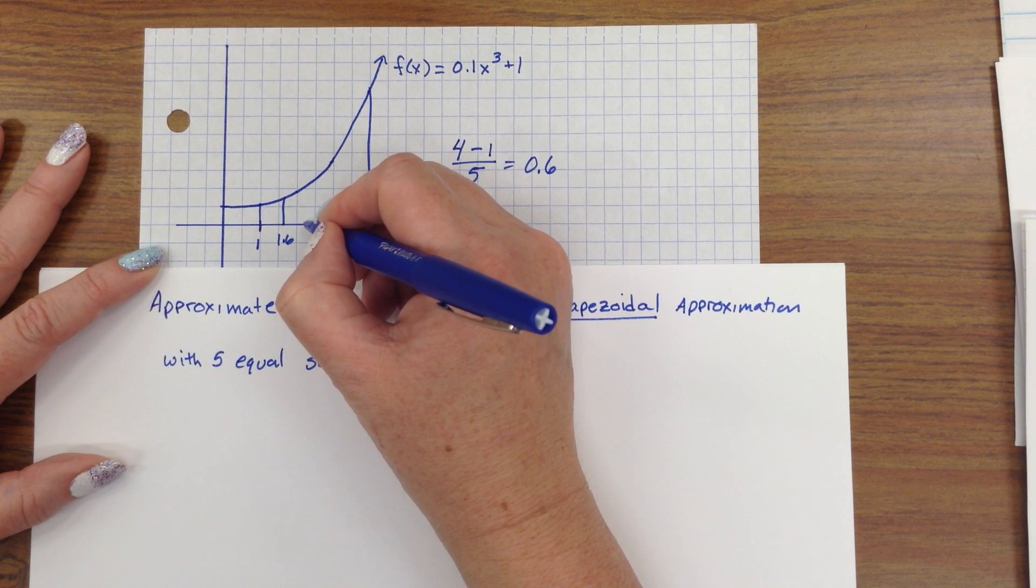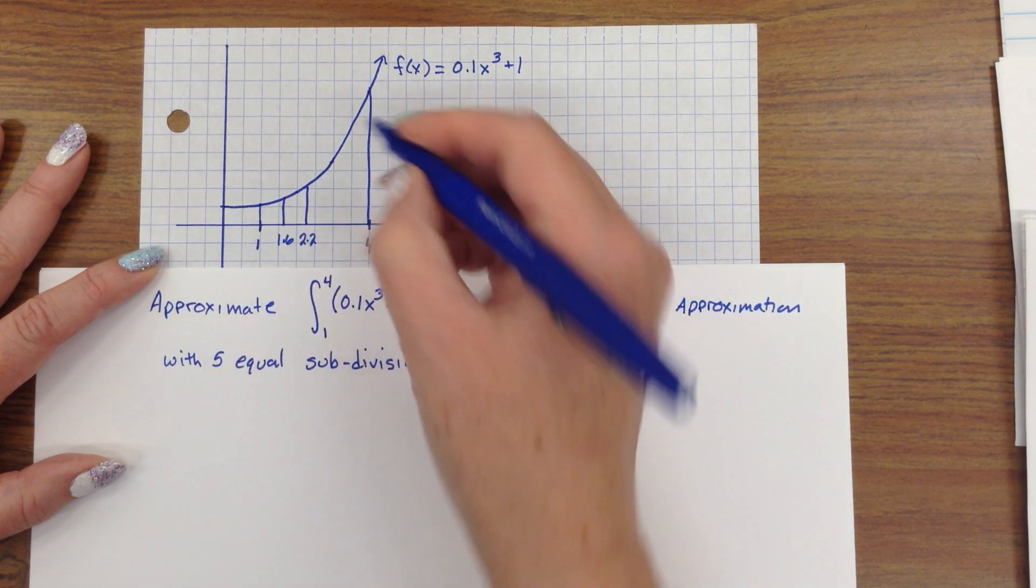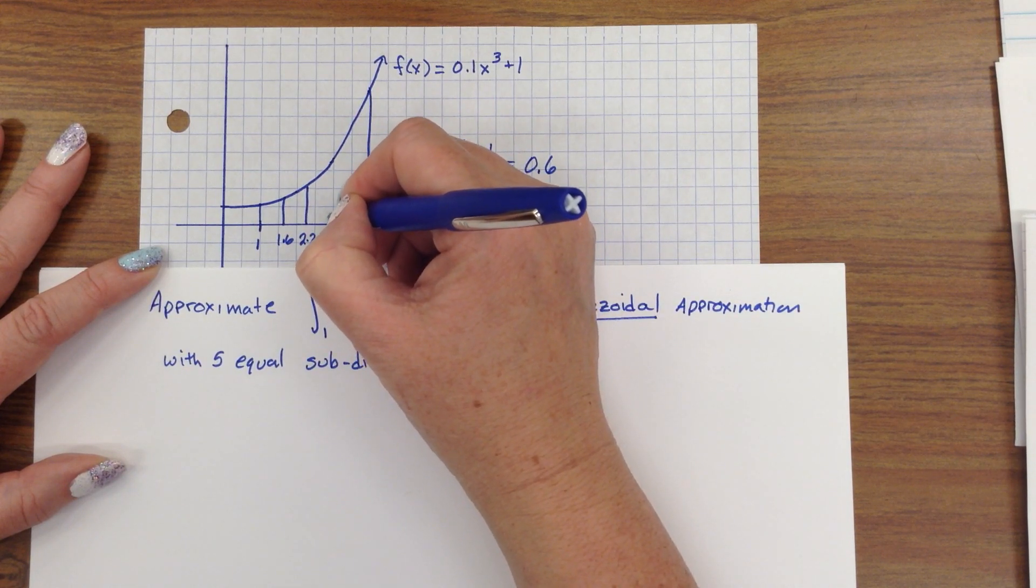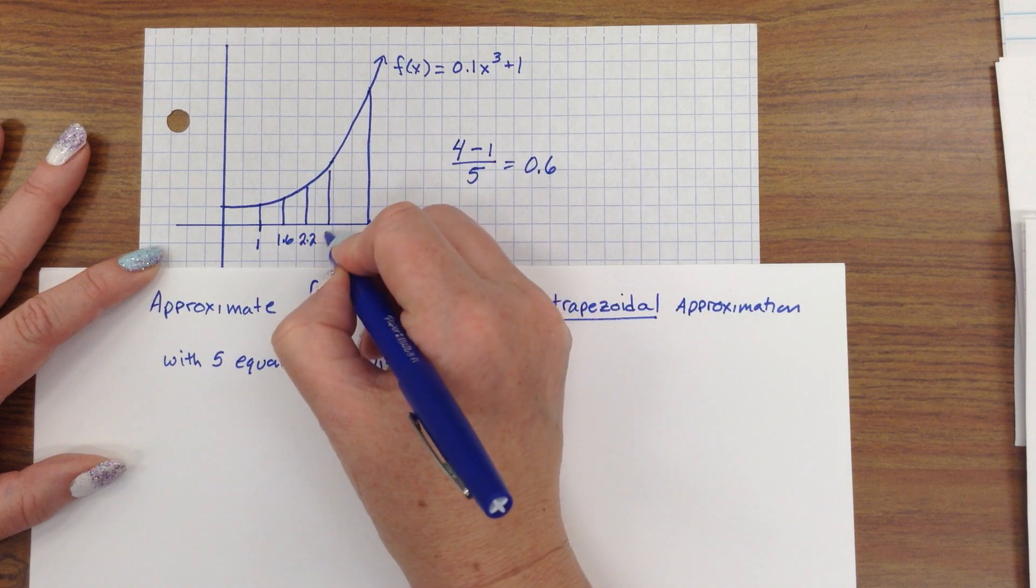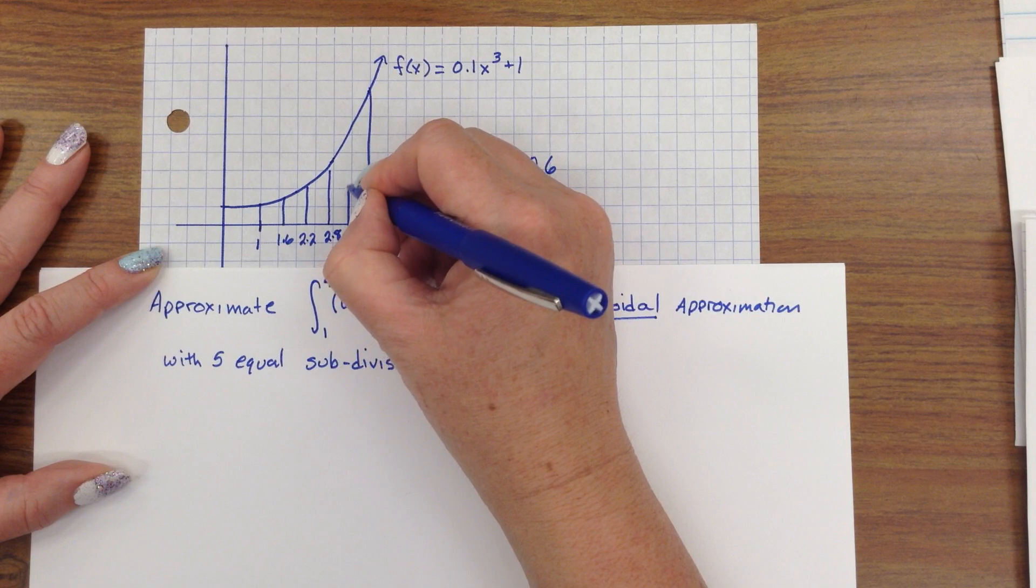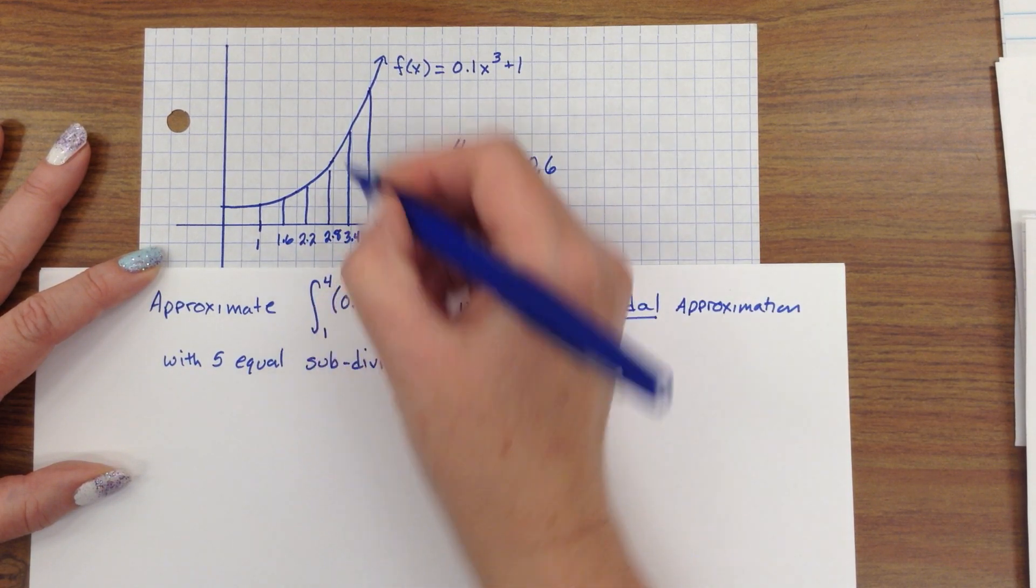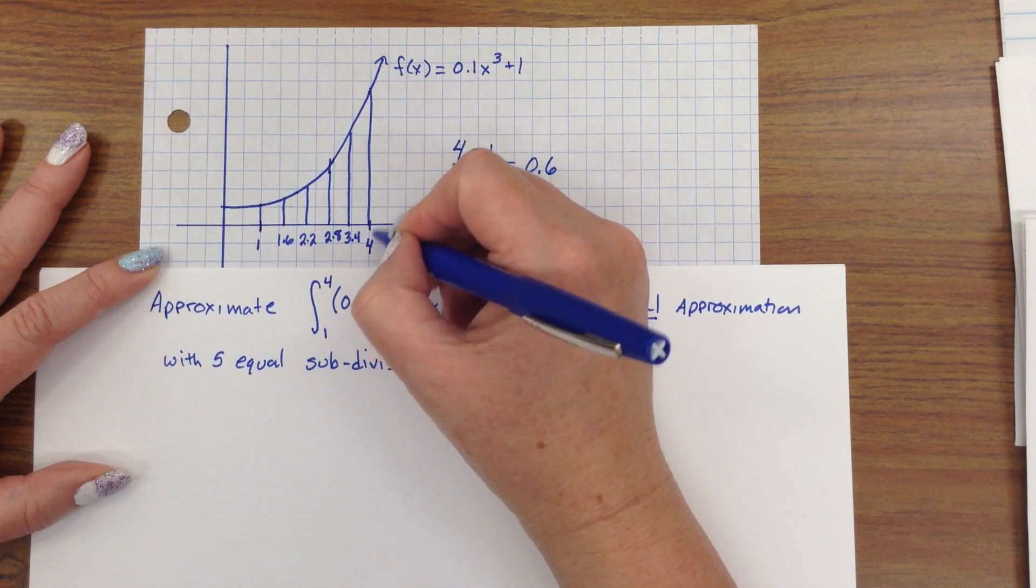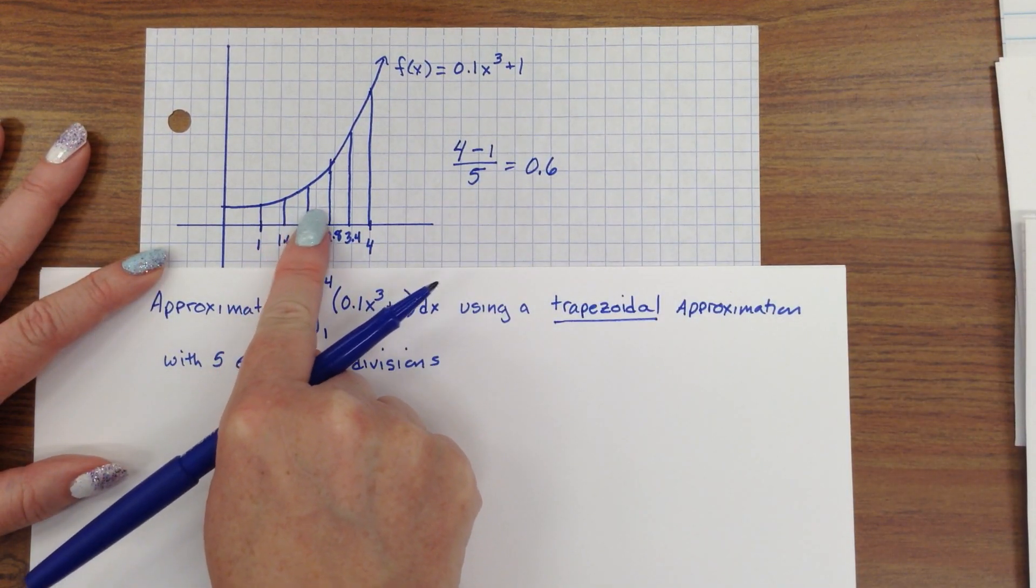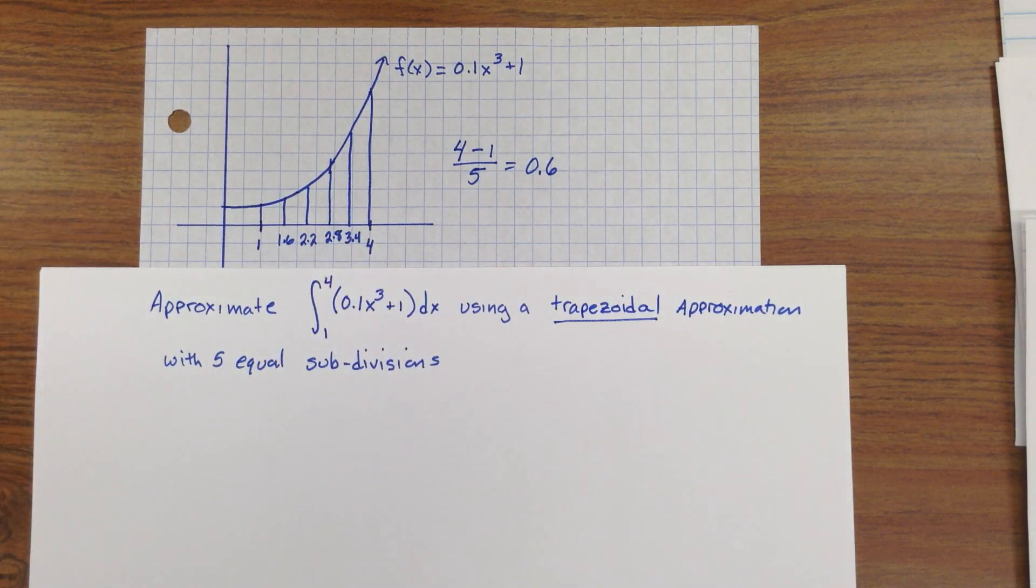I get 2.2, add 0.6 again, I get 2.8, I add 0.6 again, I get 3.4, and if you add 0.6 again, you get exactly 4. I have now 1, 2, 3, 4, 5 equal subdivisions.